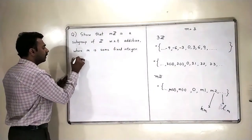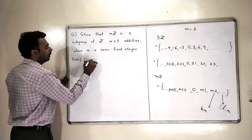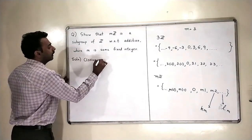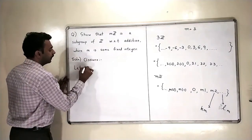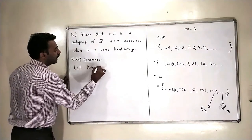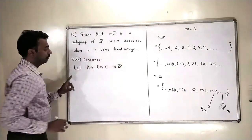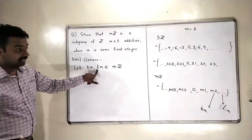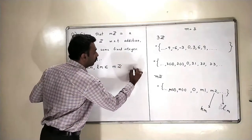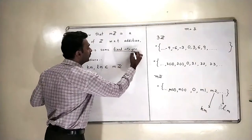So, when I start for the solution and when I talk about the closure, I will say that let km and lm belong to the set mZ. k and l are integers. What is m? m is our fixed integer.